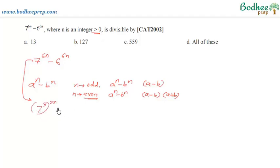By taking 2n in the power, we can be sure that for any value of n, 2n will always be an even number. And the next thing is 6 to the power 6n can be written as 6 to the power 3, to the power 2n.